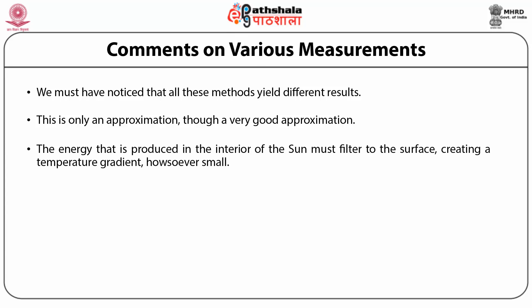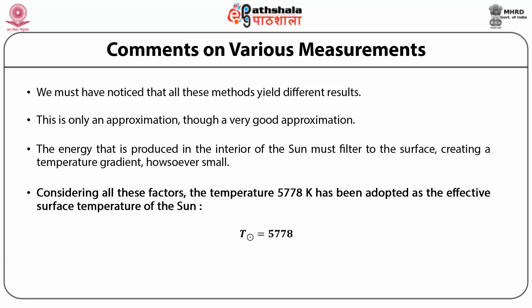The energy produced in the interior of the Sun must filter to the surface, creating a temperature gradient — however small that gradient may be. The process of dissociation and recombination taking place in the emitting layer of the Sun — the photosphere — produces emission and absorption lines, making the background spectrum of the Sun deviate slightly from an ideal black body. Considering all these factors, the temperature 5778 Kelvin has been adopted as the effective surface temperature of the Sun.